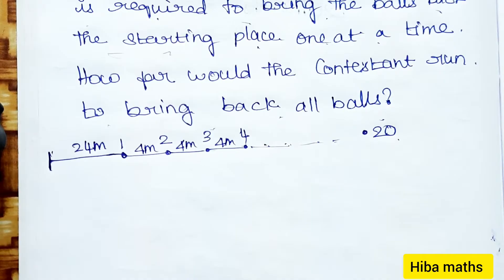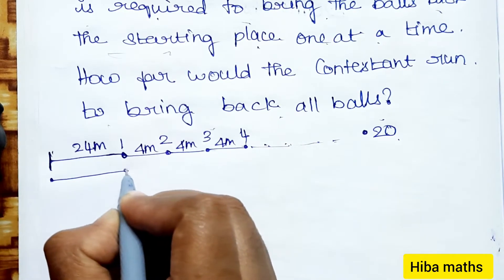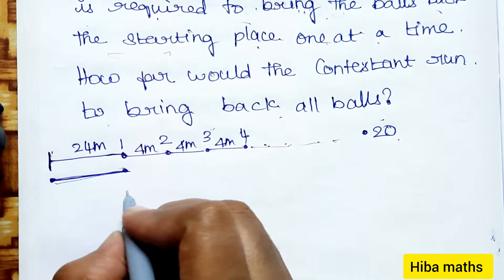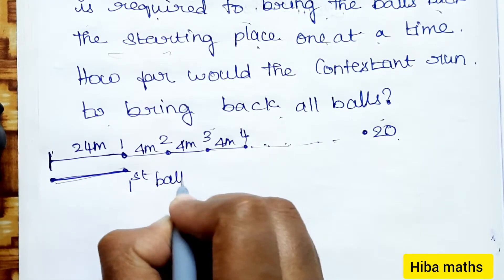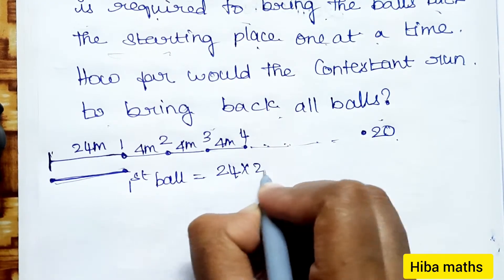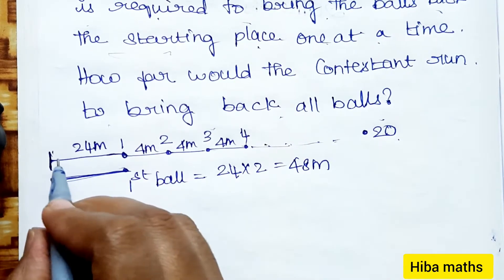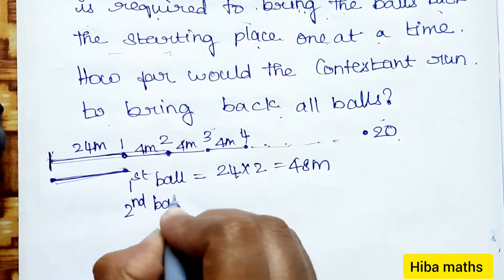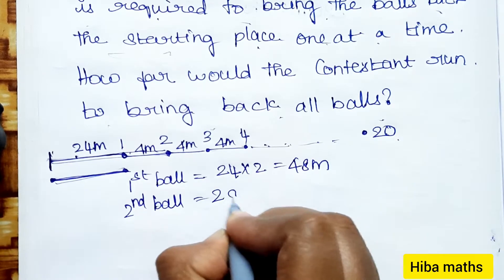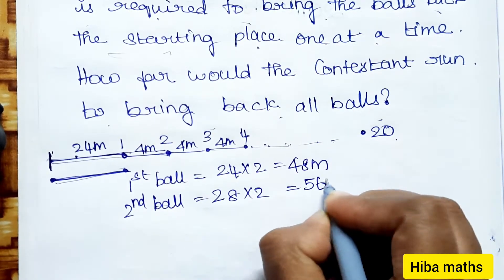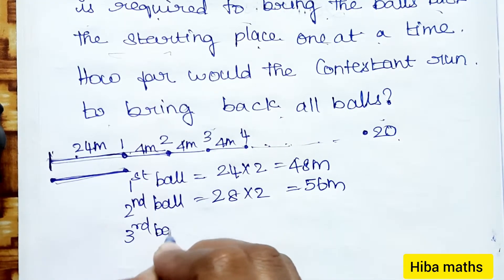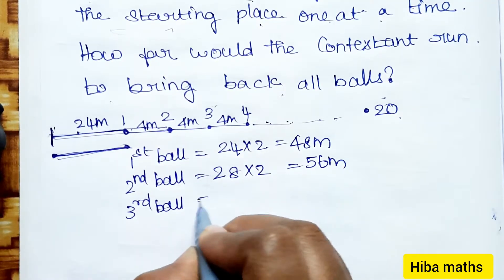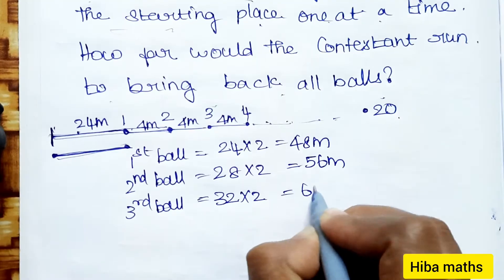The condition is: running from the starting point to pick up each ball and return. For the first ball: 24 meters there and 24 meters back = 48 meters. For the second ball: 28 meters there and back = 56 meters. For the third ball: 32 meters there and back = 64 meters.